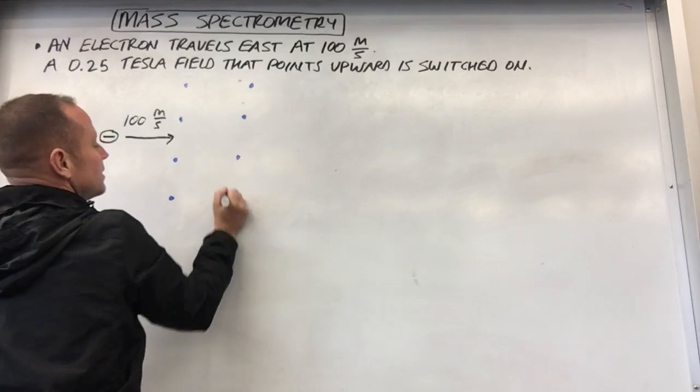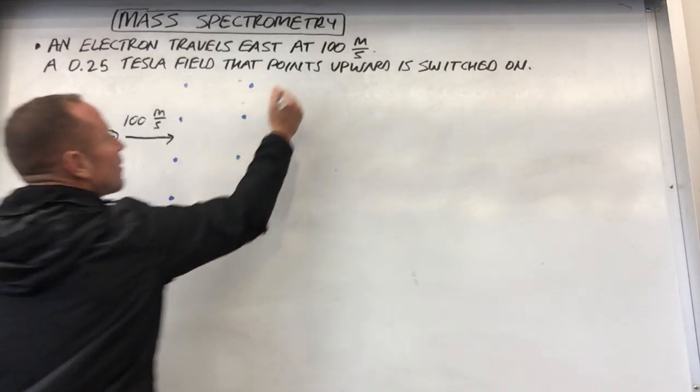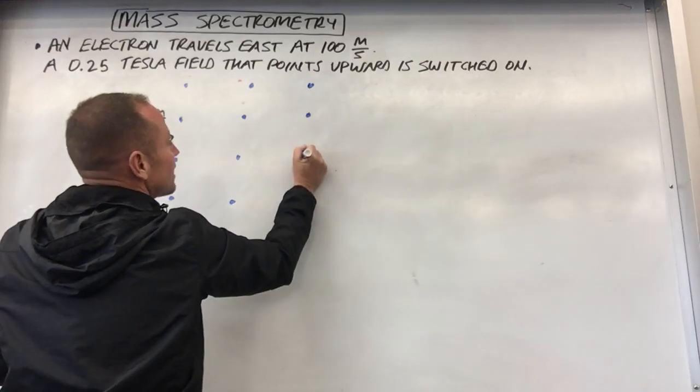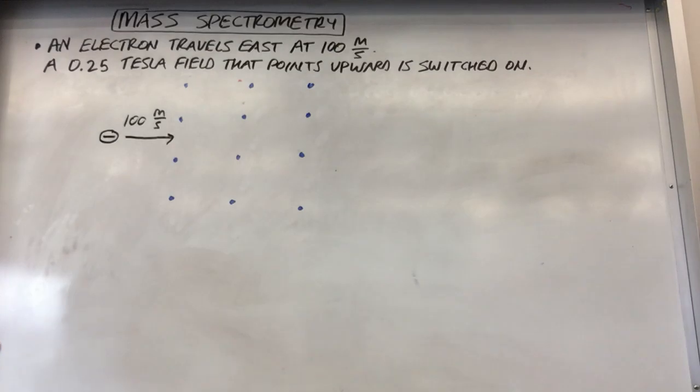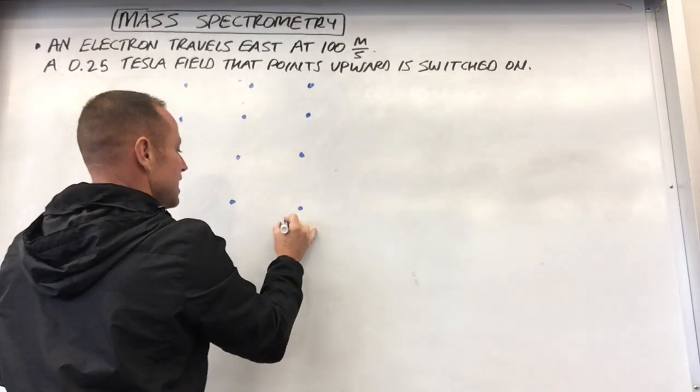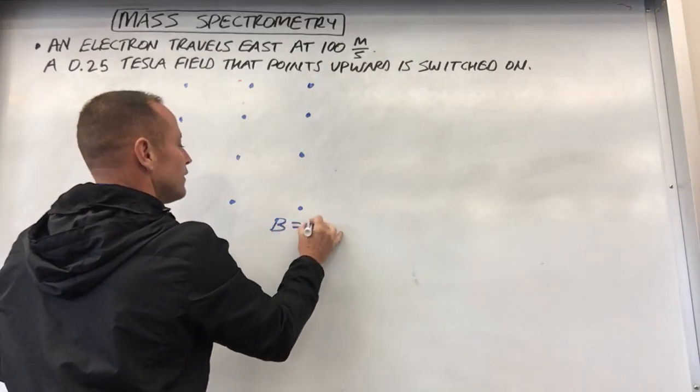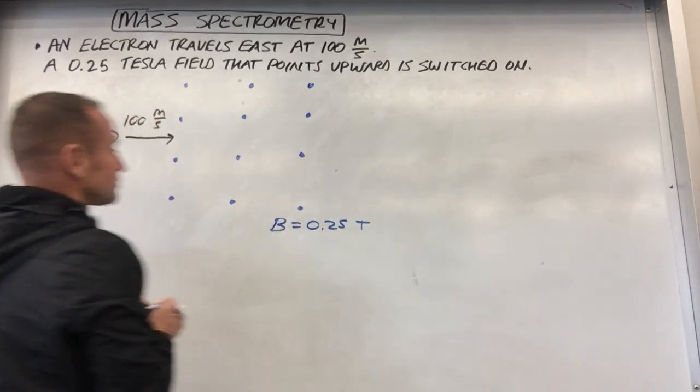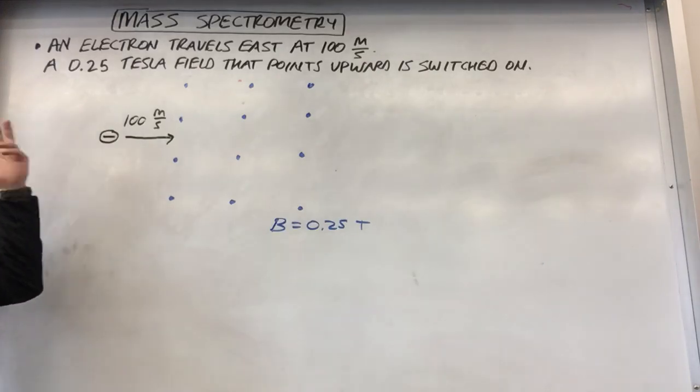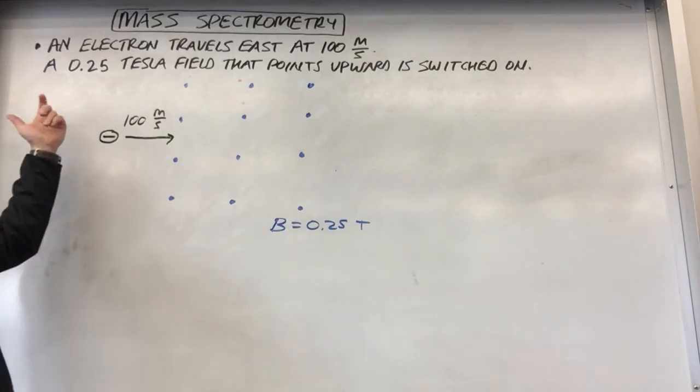As you remember, we tend to use X's for something going into the board like the tail feathers, the fletching on an arrow. But now it's coming out of the board so that's like the tip of the arrow coming toward you. So this is a 0.25 Tesla field coming out. And so you have a charged particle moving perpendicular to a field. So that's gonna make a magnetic force.